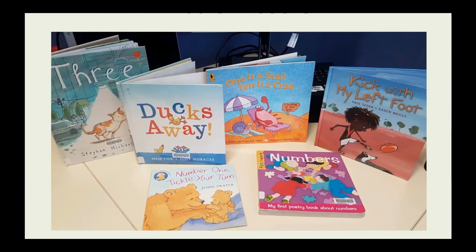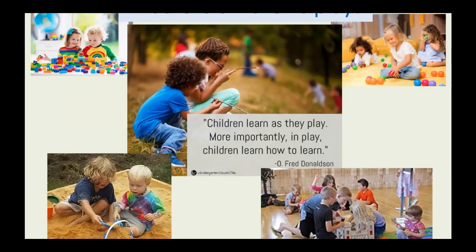Finally, there are some wonderful books that involve maths that you can read to your kids. The book Three is a gorgeous story about a little dog with only three legs who meets lots of friends along the way with different numbers of legs. Ducks Away is a funny book about ducks trying to cross a bridge but they keep falling off. Kick With My Left Foot is all about figuring out your left from your right. There are also lots of good number poetry books and number rhymes. Use your local library and ask your librarian to find you books to do with maths and numbers — you'll end up with a wonderful collection. Remember, playing is children's work, and when they're playing, they're doing maths without even knowing it. Children learn as they play and, more importantly, in play children learn how to learn.